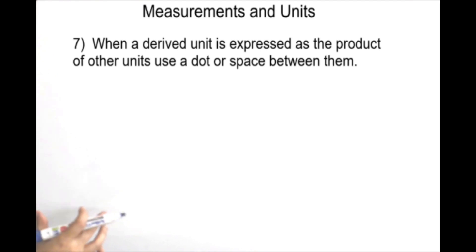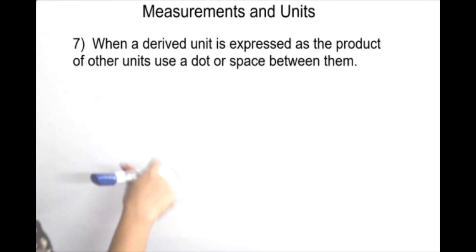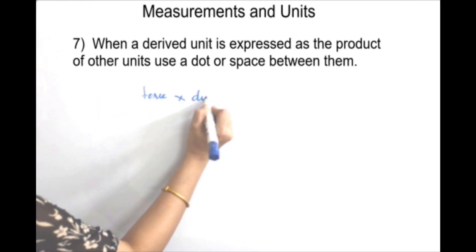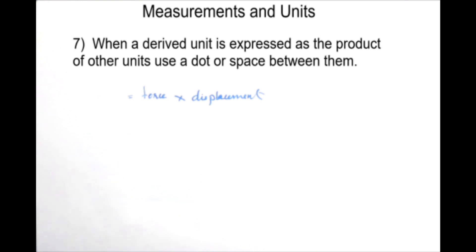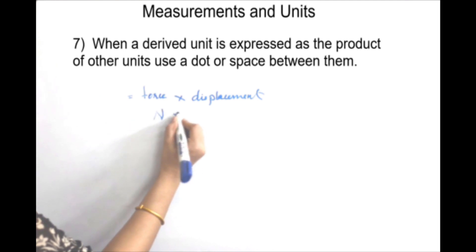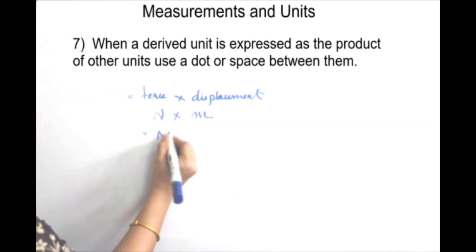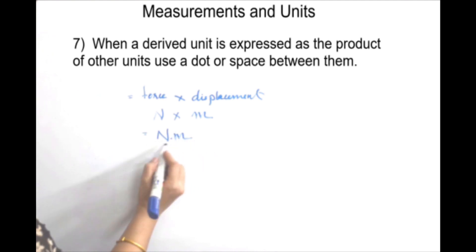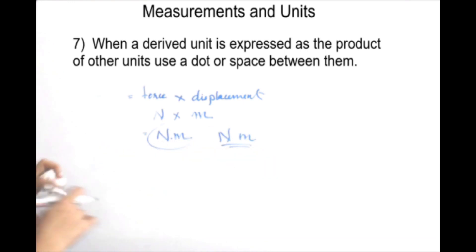In these two units, there is a dot and a space. For example, force into displacement. Force multiplied by displacement gives work. The unit of force is newton and the unit of displacement is meter. You can represent their product with a dot or a small space between them. That is the 7th rule.